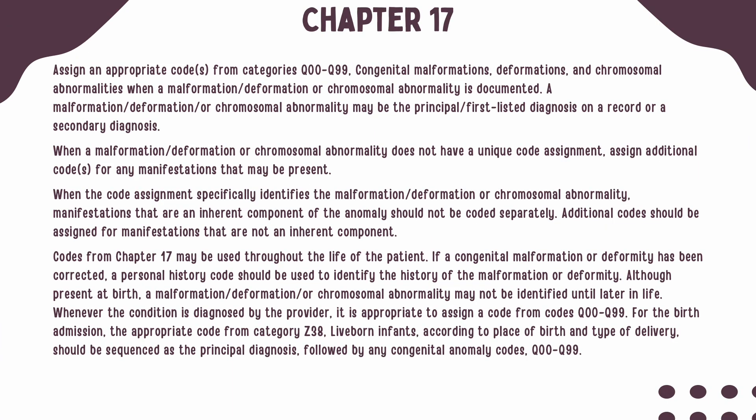Codes from Chapter 17, Q00 through Q99, should be used when a Malformation, Deformation, or a Chromosomal Abnormality is documented. These codes can be used as either first listed or secondary diagnoses. When a Malformation, Deformation, or Chromosomal Abnormality does not have a unique code, you should assign codes for any manifestations that may be present.